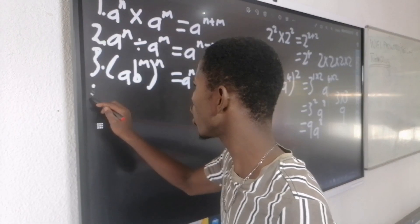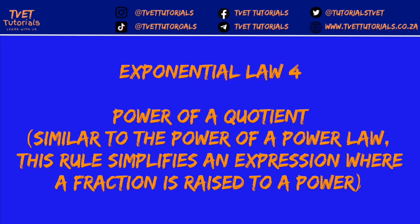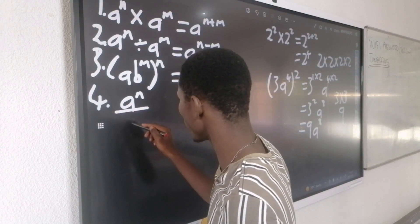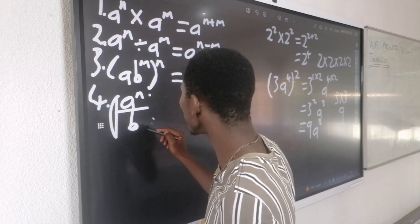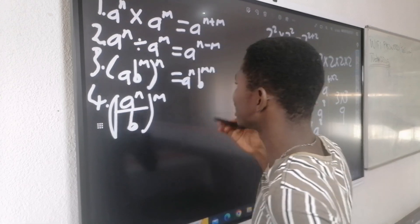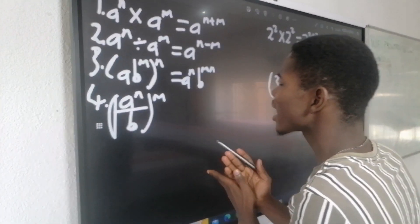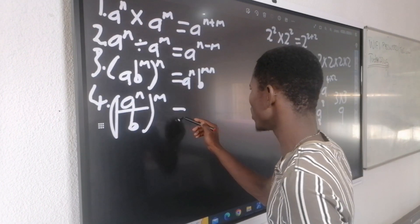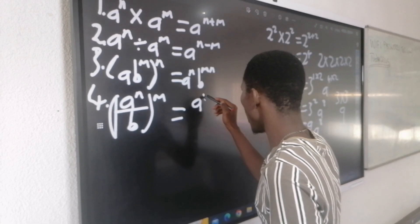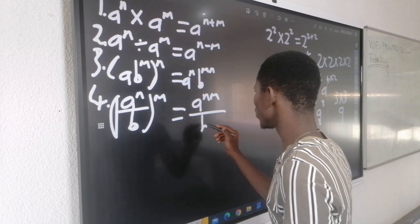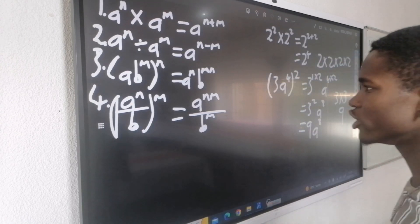Exponential law number 4 explains the same thing as law number 3, but the difference is that it has a division. (A/B)^n — it does not matter if it is dividing. As long as there is a bracket, brackets mean multiplication. This means it will be A to the power of N·M divided by B to the power of M.